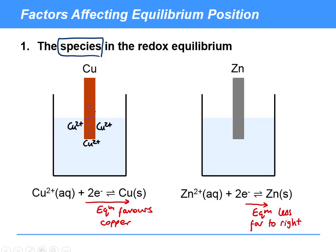So have a go, pause the video, and see if you can draw what the situation will be like for zinc on this electrode that shows the equilibrium is less far to the right. OK, let's think about what you might have drawn. In this case here, the zinc is more likely to lose the electrons, and so we'll end up with a few more Zn2 plus ions around the electrode.